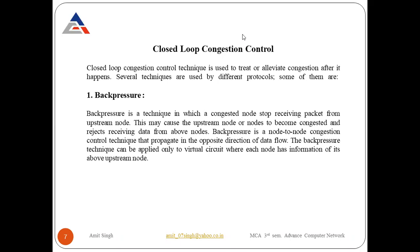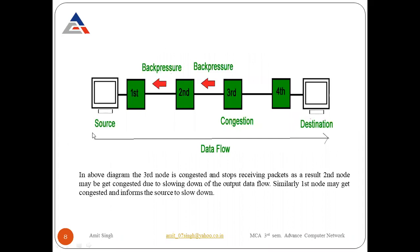Back pressure is a node-to-node connection control technique that propagates in the opposite direction of data flow. If data flows from left to right, the back pressure signal travels from right to left. This technique can only be applied to virtual circuits where each node has information about its upstream nodes.